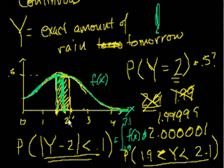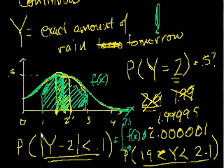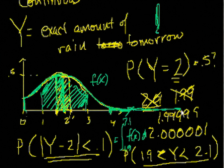If you said, what's the probability that we get somewhere between 1 and 3 inches of rain? The probability is much higher — it would cover all of this area. You could also say, what's the probability we have less than 0.1 inches of rain? Then you would go here and calculate this area. And you could say, what's the probability that we have more than 4 inches of rain tomorrow? Then you would start here and calculate the area under the curve all the way to infinity. Hopefully that's not an infinite number — if you take this sum, it'll say, oh, there's only a 10% chance that you have more than 4 inches tomorrow.